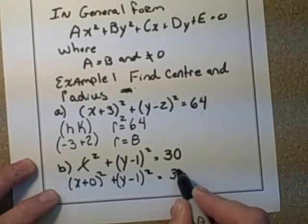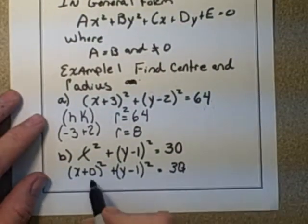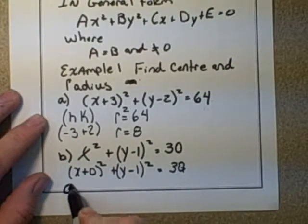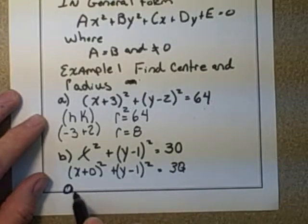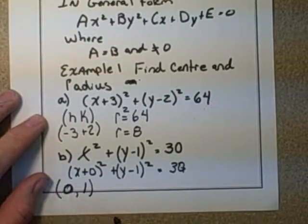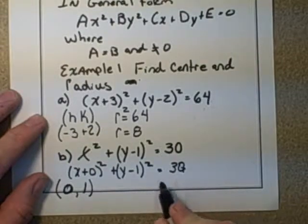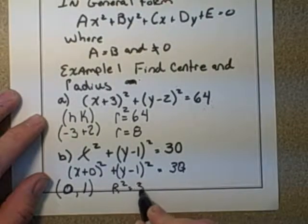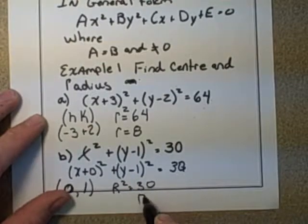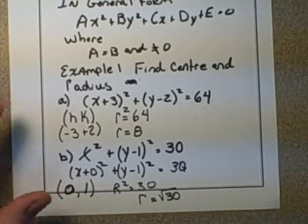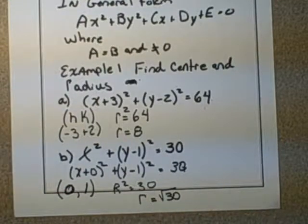So if we were to calculate the center in this case, the h is 0 and the k is 1. So (0,1) is our center. And then to get our radius, we take r² = 30. Therefore r = √30, and we can't reduce √30 down any farther. That would be the very first example of circle equations.